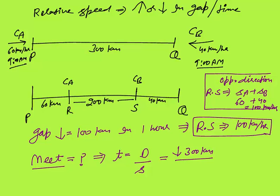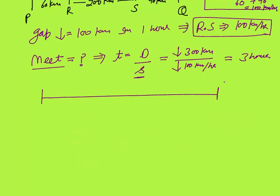We need to reduce the gap of 300 km. Speed — I will take the relative speed. Whenever a relative speed question is there, you have to take the relative speed. The relative speed is 60 plus 40 = 100 km per hour. The gap is reducing at a speed of 100 km per hour. So, time would be 3 hours. After 3 hours, these two cars will meet. In 3 hours, Car A will cover 180 km (60×3) and Car B will cover 120 km (40×3). 180 plus 120 equals 300 — confirmed. Car A covers 180 km in 3 hours, and these two cars will meet after 3 hours.